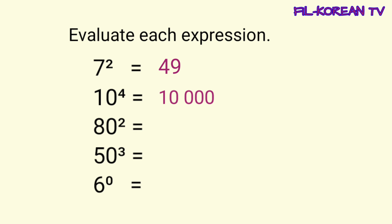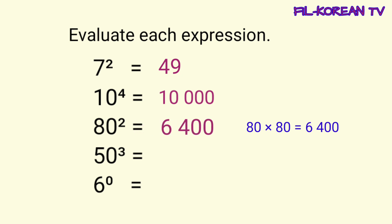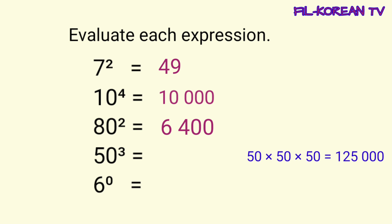Number 3, 80 to the 2nd power. Ibig sabihin, dalawang ulit natin imumultiply ang 80 sa kanyang sarili. 80 times 80 equals 6,400. Next, 50 to the 3rd power. Ibig sabihin, imumultiply natin ang 50 sa kanyang sarili ng tatlong ulit. 50 times 50 times 50 equals 125,000. Ito yung value ng 50 to the 3rd power.